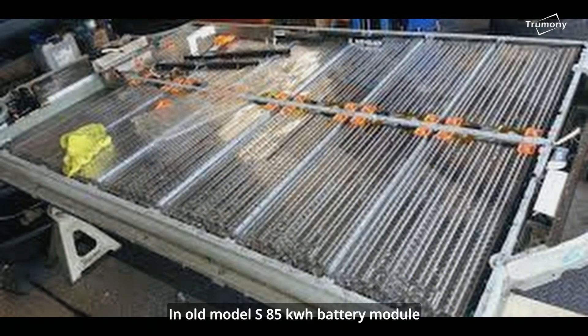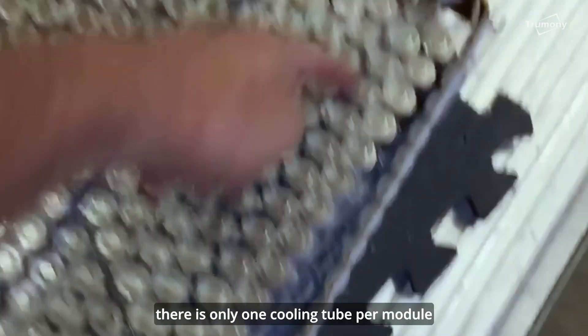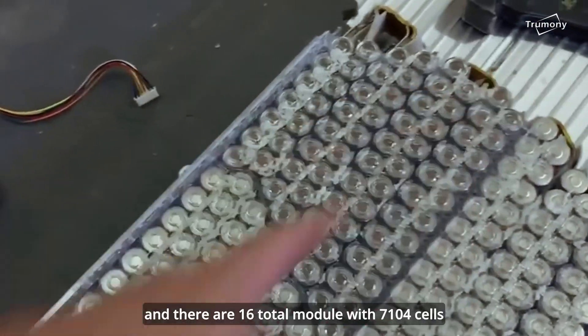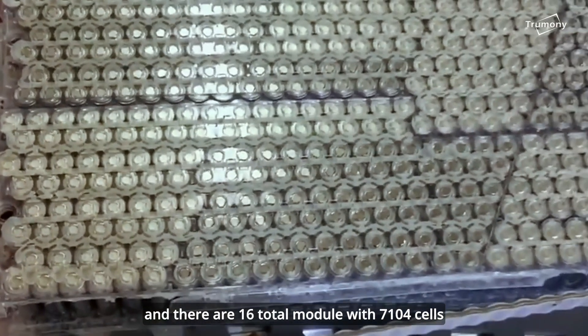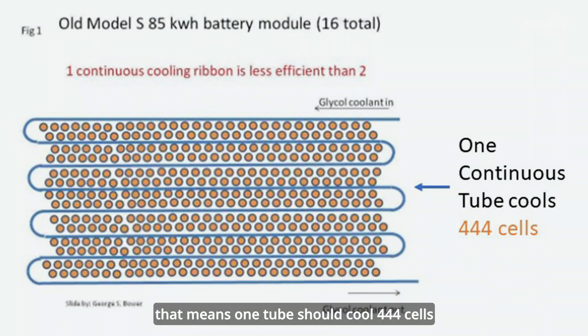In old Model S 85kWh battery module, there is only one cooling tube per module, and there are 16 total modules with 7104 cells. That means one tube should cool 444 cells.